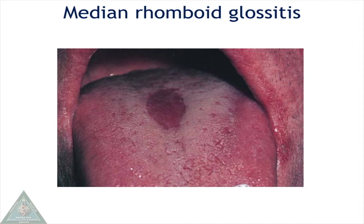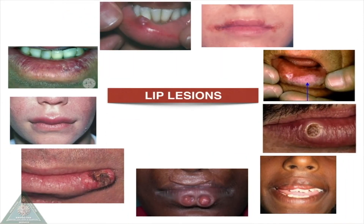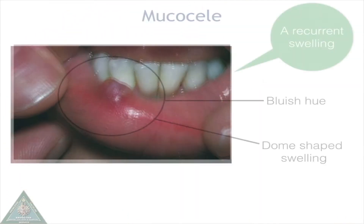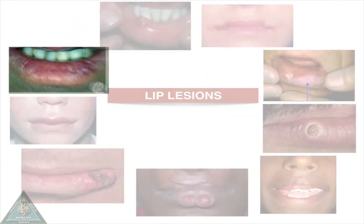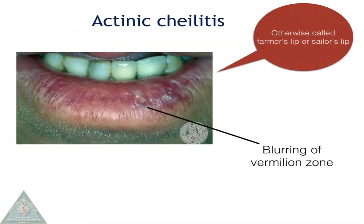Median rhomboid glossitis is a type of candida infection characterized by a focal area of depapillation found on the dorsum of the tongue. Moving to lip lesions: mucocele, or mucus extravasation cyst, is a type of recurrent swelling that appears as a bluish, dome-shaped swelling.